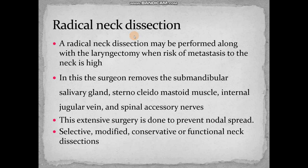Coming to the radical neck dissection — this surgery we have already studied in a previous cancer context. Radical neck dissection may be performed along with laryngectomy when metastasis is suspected. The surgeon will be removing the salivary gland, the sternocleidomastoid muscle, internal jugular vein, as well as the spinal accessory nerves. This is very extensive surgery to prevent nodal spread.